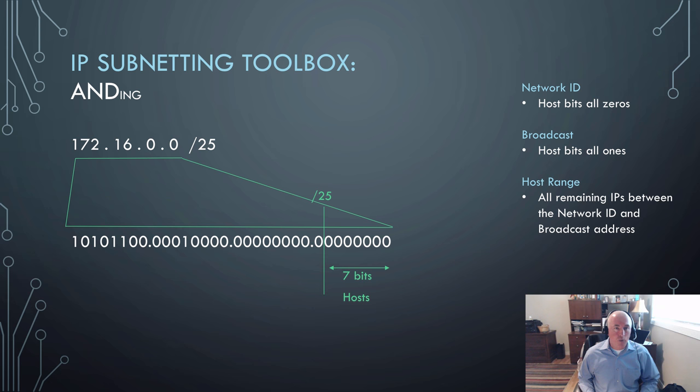So here's the binary zoom work from before. And in this case, we are going to be identifying the network ID. And on the right, you can see a network ID is where the host bits are all zeros, a broadcast where the host bits are all ones, and everything left in between the network ID and broadcast is the usable host range.